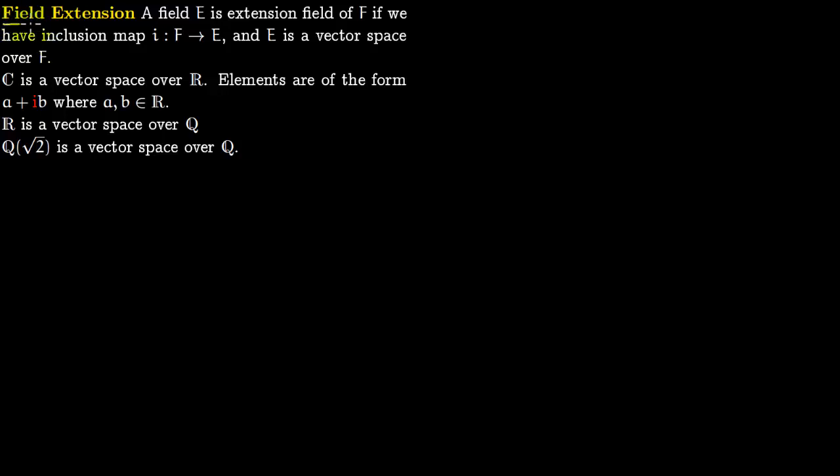In this lecture we talk about field extensions. A field E is an extension field of some base field F if we have an inclusion map where F sits inside E. This map is injective, so F sits inside E and E is a vector space over F.